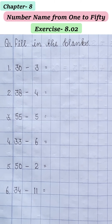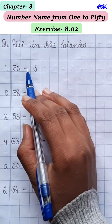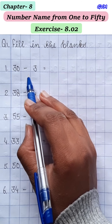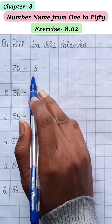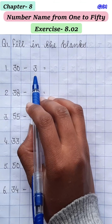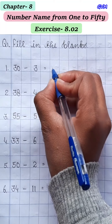So students, now we have exercise 8.02 and the question is fill in the blanks. Again हमारे पास fill in the blanks है। But यहाँ पर difference क्या है? Minus का sign है। Previous exercise में plus था यानि add करना था, और इसमें हम subtract करेंगे। So 30 minus 3 करेंगे तो वो हमारे पास कितना आएगा?